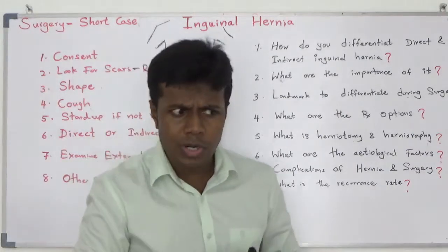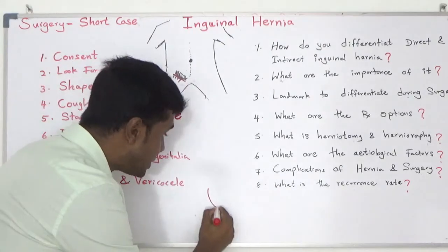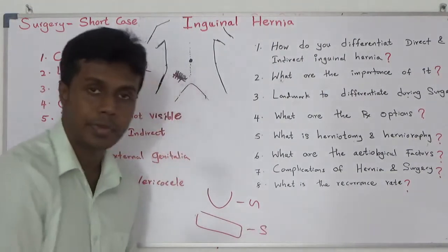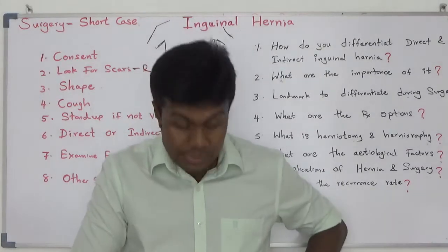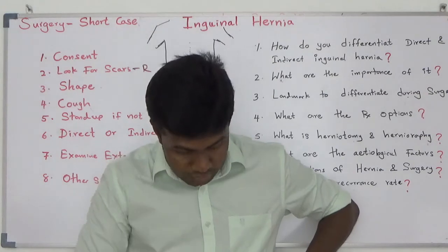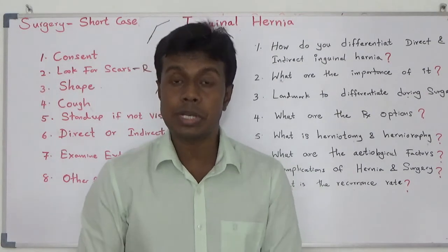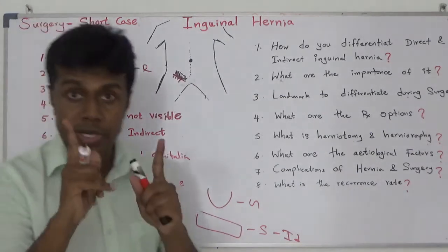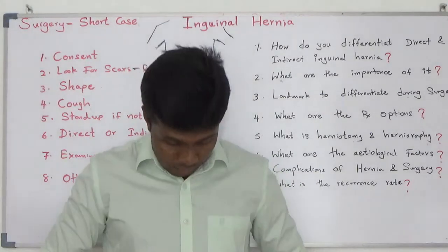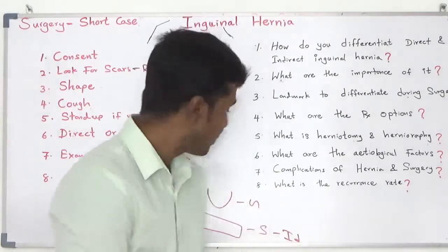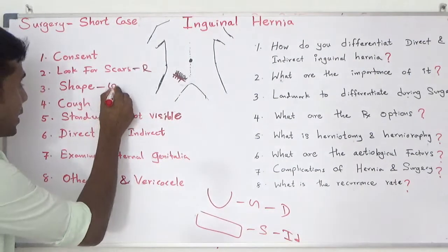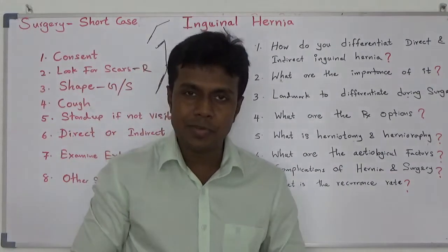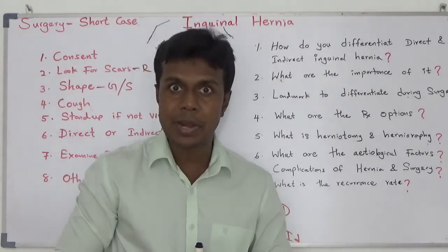Then carefully look at what is the shape of the lump. It may be globular in shape, or it may be sausage-shaped. Your indirect inguinal hernia arises from the deep inguinal ring, travels through the inguinal canal, and emerges through the superficial inguinal ring — so it looks like a sausage. Your direct inguinal hernia arises from the weaker lower abdominal wall and looks like a globule. If you see a sausage-type lump in the inguinal region, most probably it is an indirect inguinal hernia.